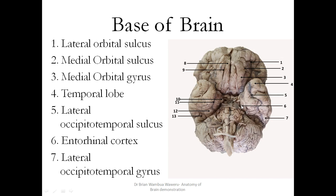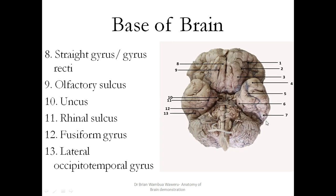This is the entorhinal cortex, and then you have the lateral occipitotemporal gyrus labeled 7. This is the straight gyrus, or gyrus rectus. Then you have the olfactory sulcus, which houses the olfactory tract — paired right and left. Then you have the uncus, and you can note its close relationship to the interpeduncular fossa. The midbrain is here, and when the uncus herniates, it usually compresses on the midbrain, sometimes forming what you call the Kernohan's notch.